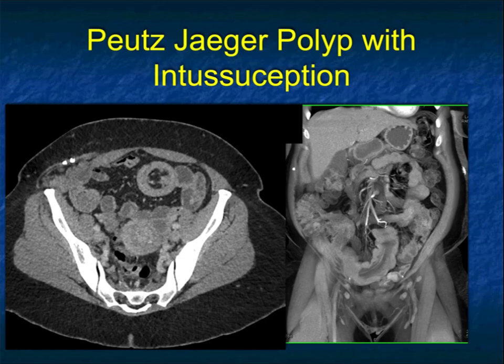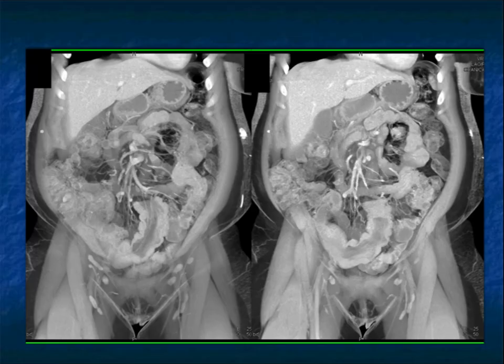This is a patient with Peutz-Jeghers syndrome who had a polyp, and you can see the intussusception. A beautiful example of intussusception — here's the fat being pulled in, here's the intussusception right here. Two very classic axial and coronal views, very important to be able to recognize. Here it is on 3D, where you can see the vessels being drawn in off the SMA.